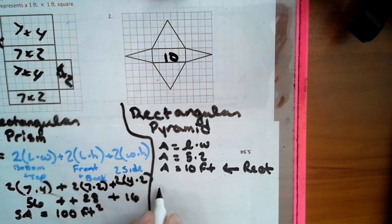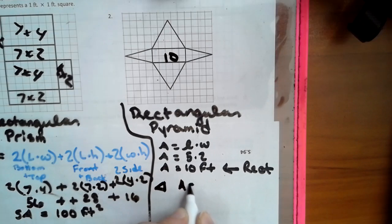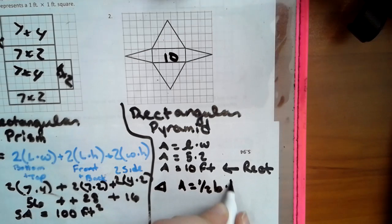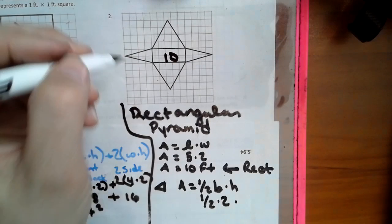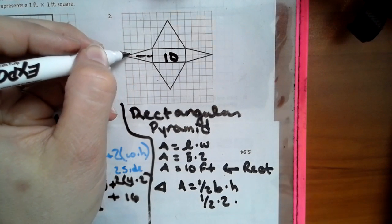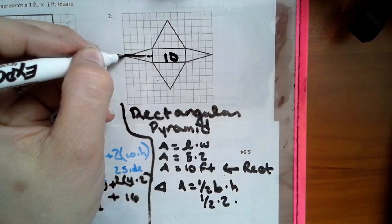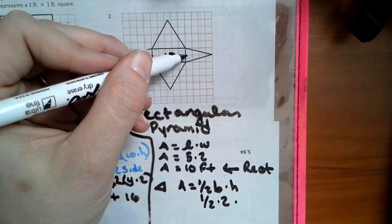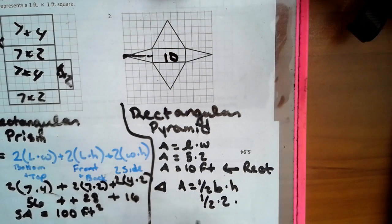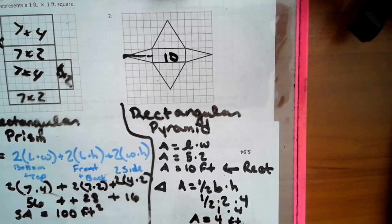Now we're going to do the side triangles. Area equals half base times height. Half of 2 times the height — 1 box, 2 box, 3 box, and it touches the 4th box. No matter how you look at it, it's 4 jumps. So that is a 2 by 4. Half of 2 is 1, times 4 is 4. Area equals 4 for the side ones, but we have 2 of them, so that's 8 feet squared.